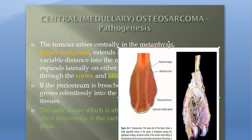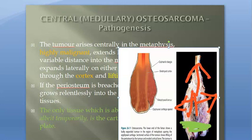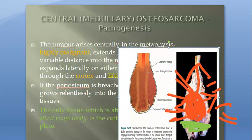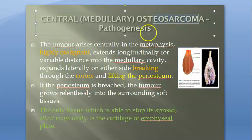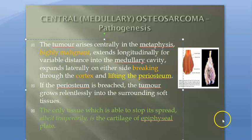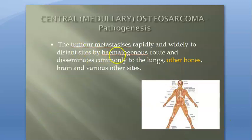The tumor is in the metaphysis and extends both longitudinally and laterally. The epiphyseal plate is the only structure that can control its spread; otherwise it can go everywhere. It can also metastasize to the lungs and brain. There is necrosis and hemorrhage in the bone. Radiologically, you can see a sunburst pattern. The tumor will lift the periosteum, producing the Codman's triangle.